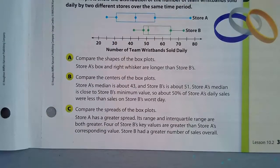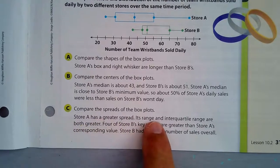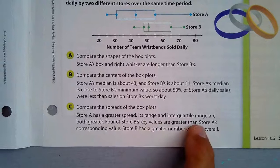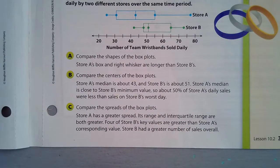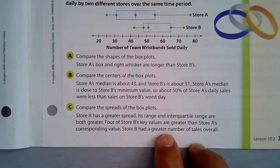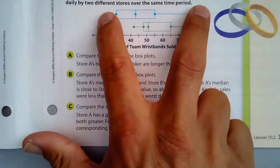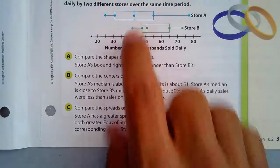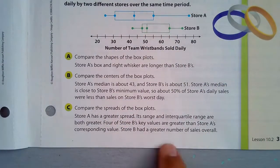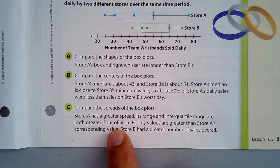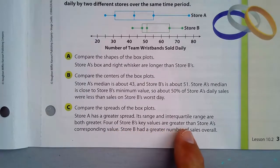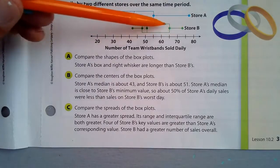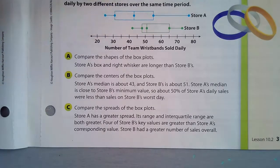Comparing the spreads of the box plots: Store A has a greater spread — its range and interquartile range are both greater. Four of these five key values are greater for Store B than for Store A's corresponding values.